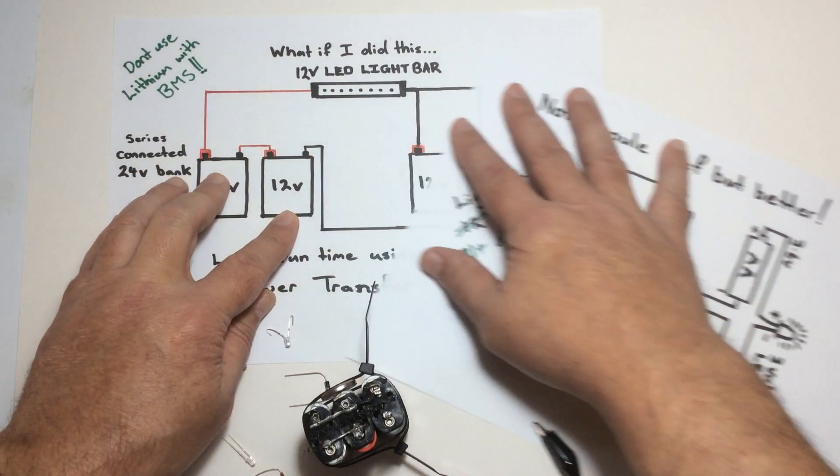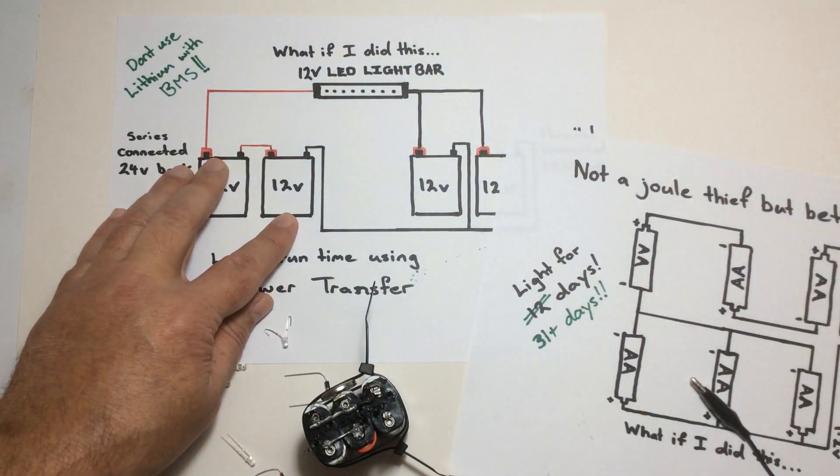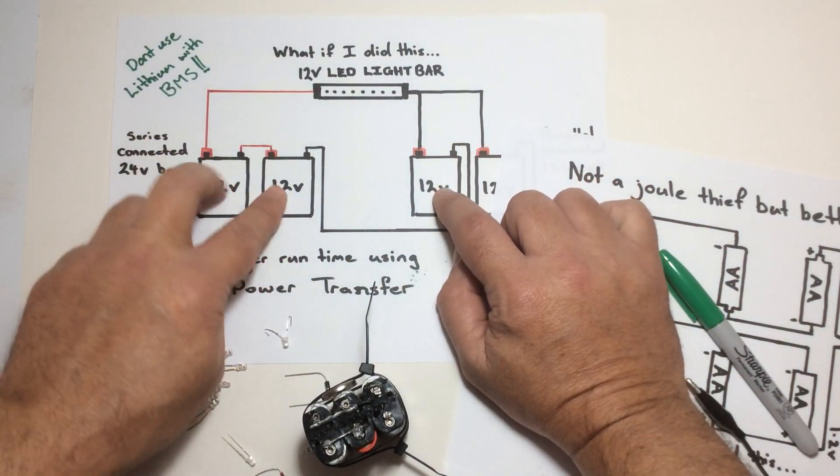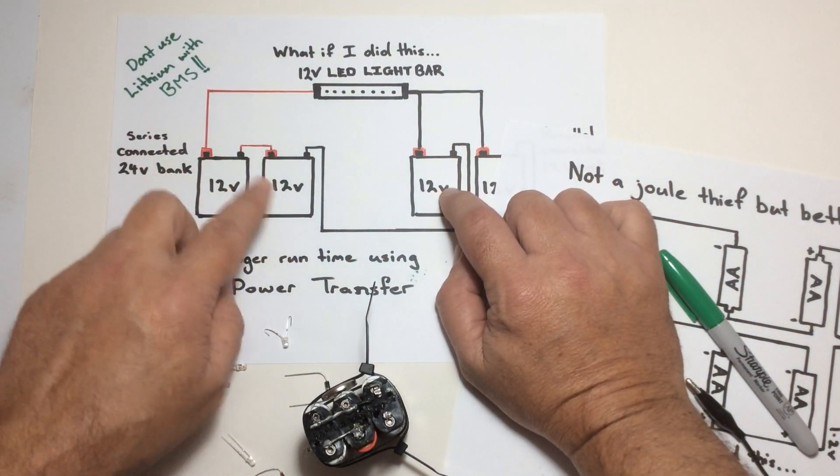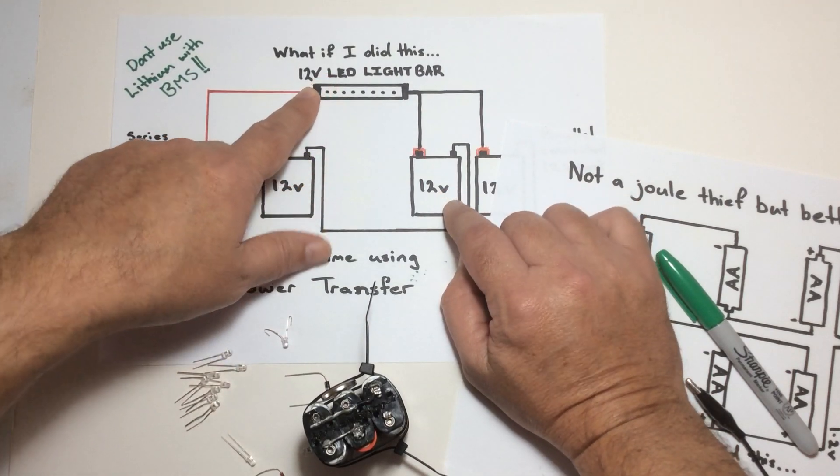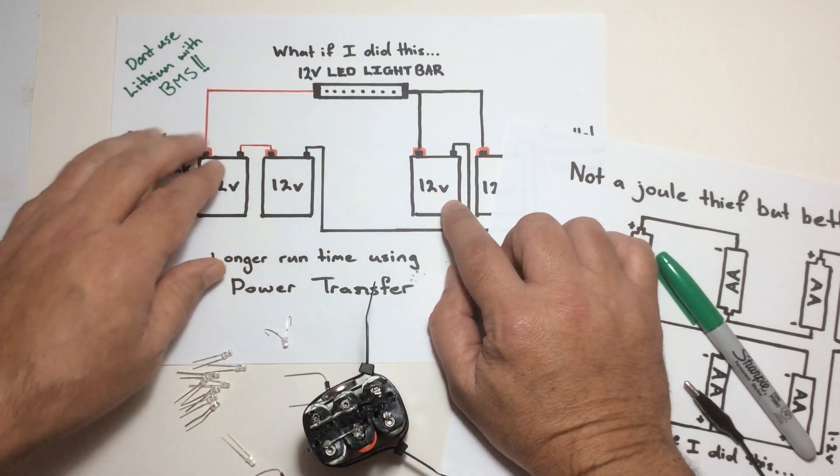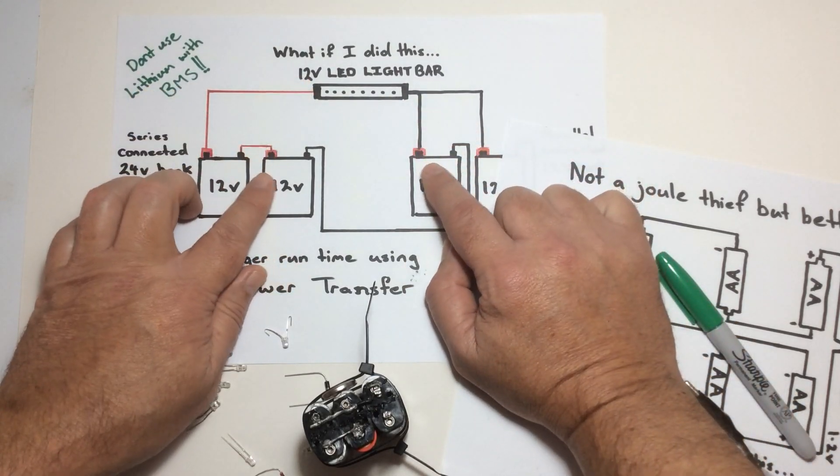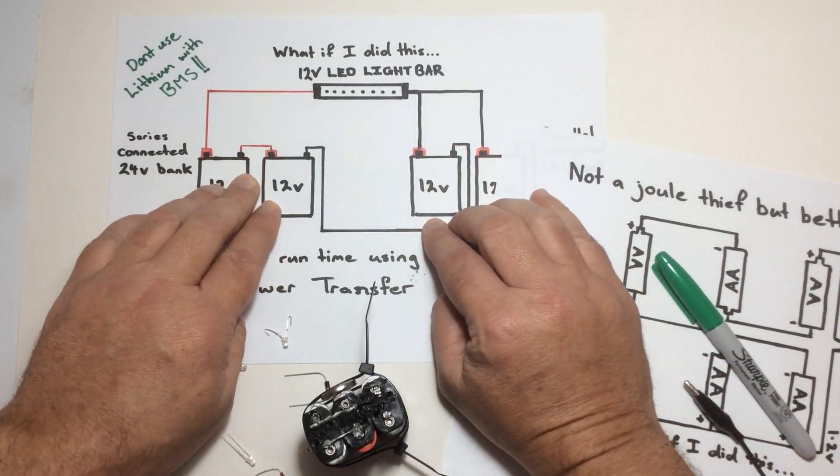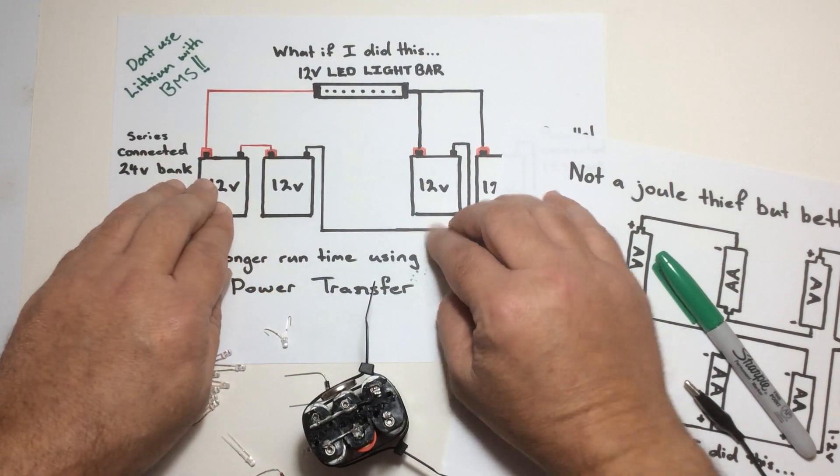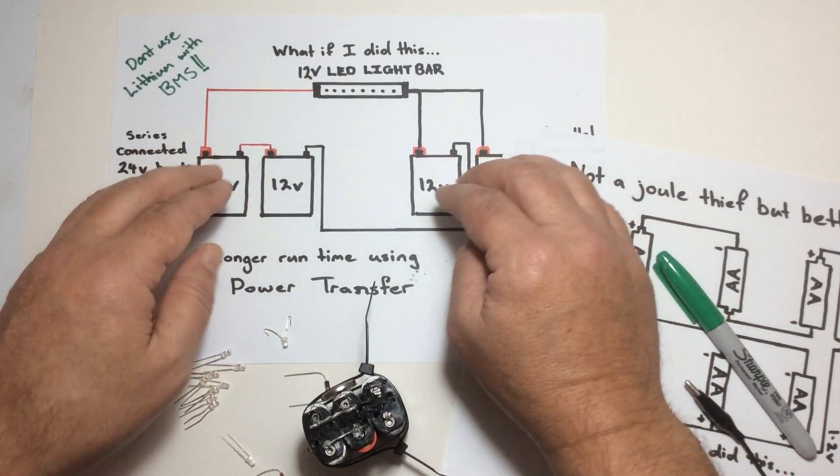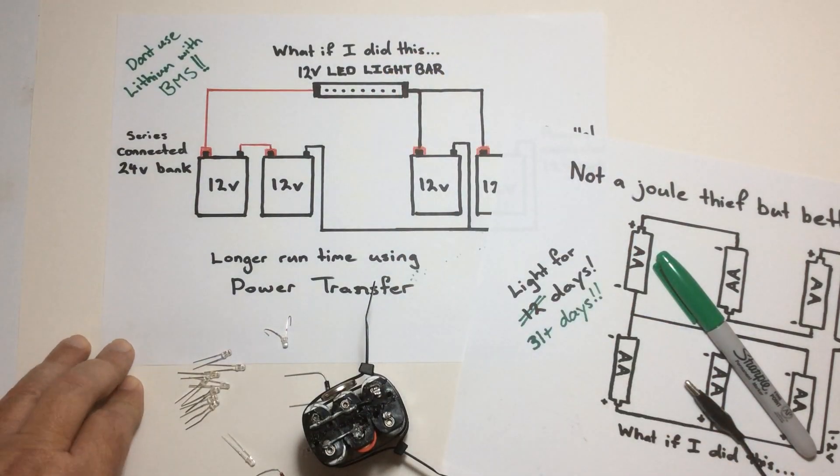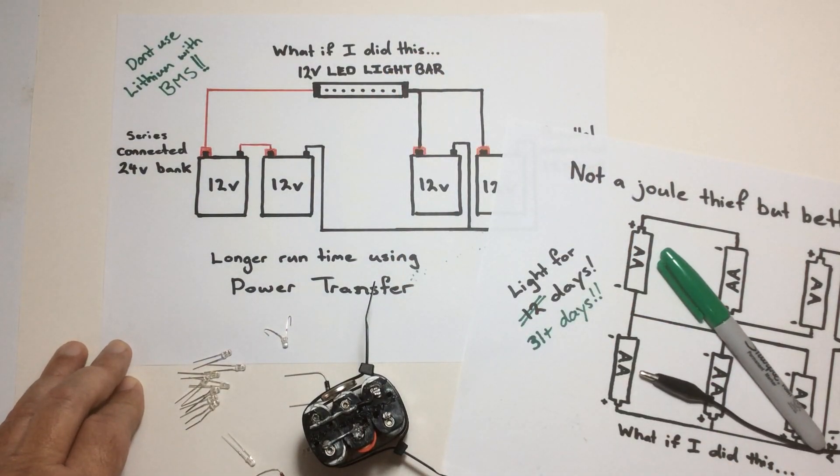For anyone worried about blowing up their light as well, the difference between here, when you connect this up and you think to yourself, hang on, that's 24 volt, the light is 12 volt, that's going to do damage to it. It's not because the power that the light sees is the difference between the two banks, which is 24 volt to 12 and that's only 12 volt. So as far as the light's concerned, it doesn't seem to be affected by it.